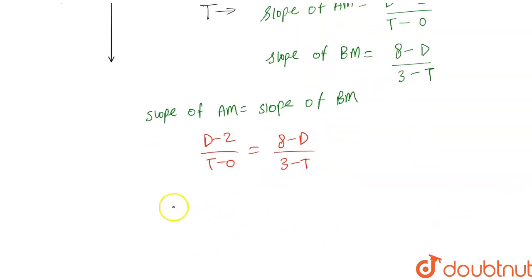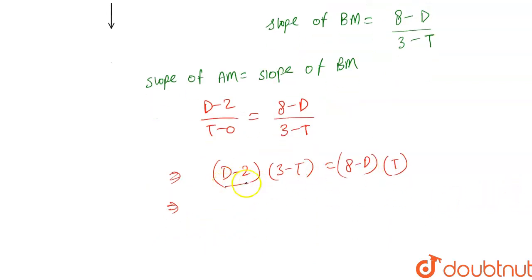Now let's solve this. On cross multiplication we get (d - 2)(3 - t) = (8 - d)t. Let's multiply these two terms: 3d - td - 6 + 2t = 8t - td.